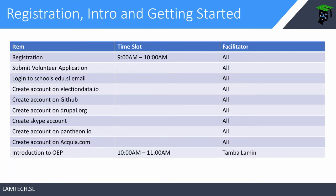For the registration process we have to do a couple of things. We have to submit our volunteer application on the platform, log into our schools.edu.sl email, and create an account on electiondata.io. We also have to create an account on GitHub, create an account on Drupal.org, create a Skype account, and an Acquia.com account. I will explain why you have to create all of these accounts as part of the setup process.